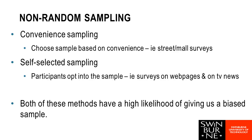Whenever we can, ideally we would like to be doing random sampling. Non-random sampling tends to increase the chance that we will have a biased sample. Two common ways of doing non-random sampling are convenience sampling and self-selected sampling, both typically chosen when we're limited by time or budget. When looking at other people's studies, it's important to see whether they've stated their sampling method, because these approaches make biased results more likely.